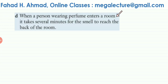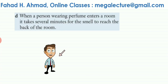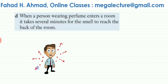Part D states: when a person wearing perfume enters a room, it takes several minutes for the smell to reach the back of the room. The perfume particles evaporate, change into gas, and start moving randomly in all directions. Being gaseous particles, they move freely in all directions, spreading randomly and continuously colliding with air particles.